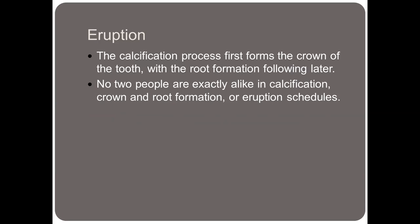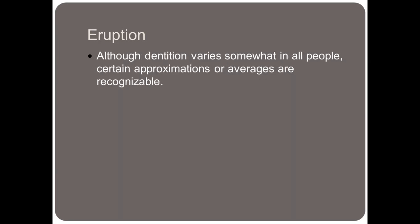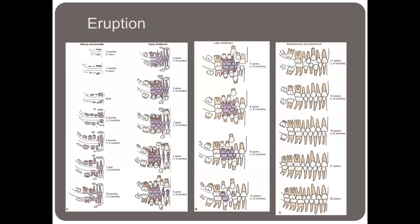The calcification process first forms the crown of the tooth, with root formation following later. No two people are exactly alike in the calcification, crown and root formation, or eruption schedules. During enamel and dentin development, minerals are deposited in the forming tooth germs. Any fever, metabolic dysfunction, childhood or nutritional disease, or physical illness or trauma can alter the formation of the teeth and even stop their formation or mineralization completely. Although dentition varies somewhat in all people, there are certain approximations or averages that are recognizable and expected to be known.